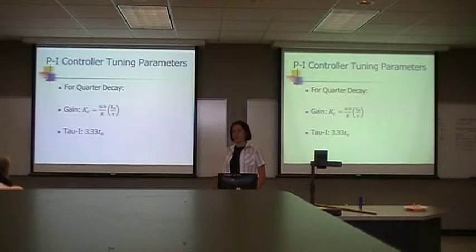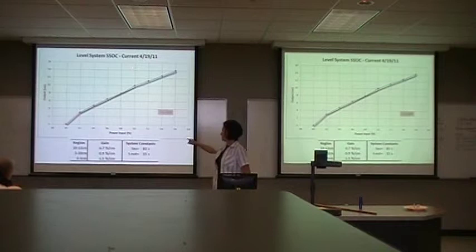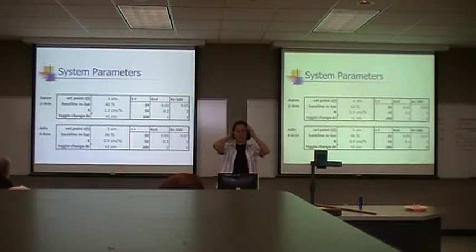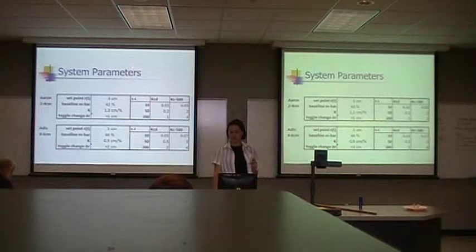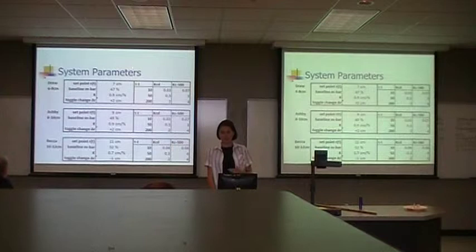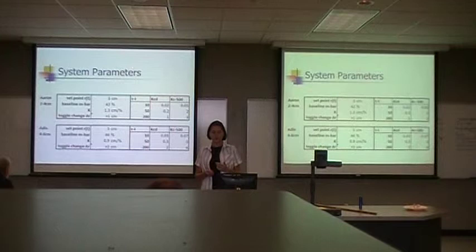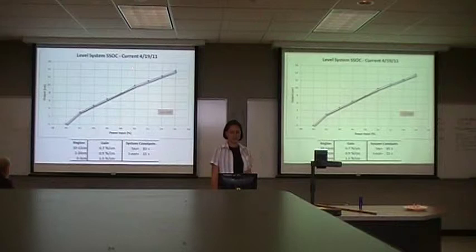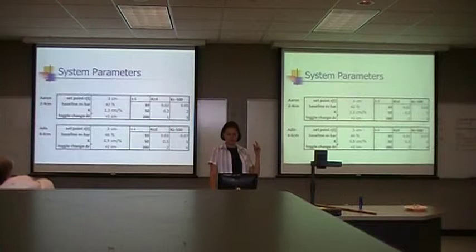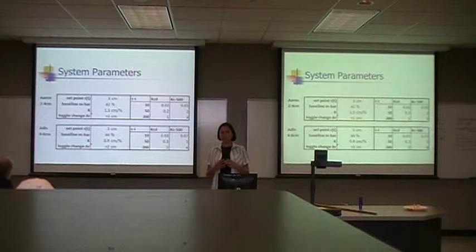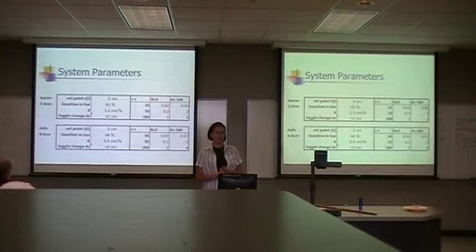Using the SSOC and our system constants to find t-naught, we can now get system parameters for experiments. This slide and the next one are values that my team was planning to use for the PI controller experiments. Aaron's set point is 3 centimeters, his baseline is 42%, his decay value is 1.3 centimeters from the new SSOC. For three different values of tau_i, he tested the critical decay and the 1/500th decay of our system — six total experiments.